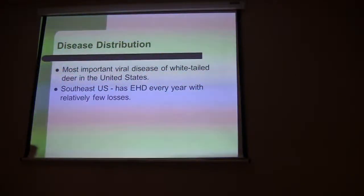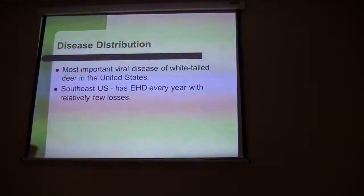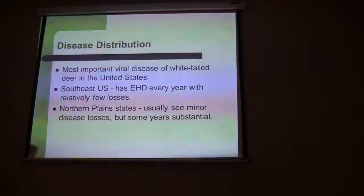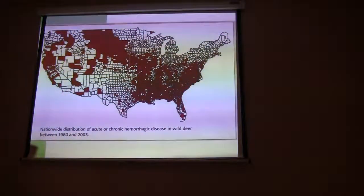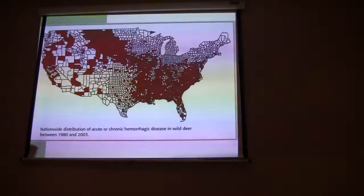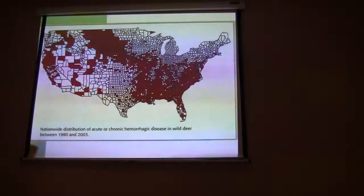EHD is the most important disease for white-tailed deer in the United States, so it's not just us here in South Dakota. In the southern states, they have EHD every year, but the deer seem to develop some type of immunity to it, so their losses are pretty slim. Here in the northern states, usually our losses are slim because we don't see it all the time, but when we do have it, sometimes it's pretty substantial. This map shows its distribution across the United States, and actually this year there are going to be a lot more counties that are red, because it appears to be in some areas that haven't experienced it before.